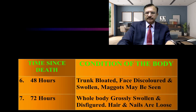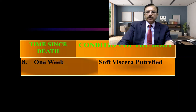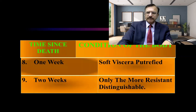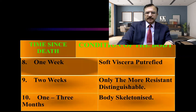In 72 hours, the whole body is grossly swollen and disfigured, and the hair and nails are loose. In one week, the soft viscera putrefy. In two weeks, only the more resistant and distinguishable viscera, like the ovaries and the prostate, are recognizable. And in one to three months, the body is completely skeletonized. This is the overall timeframe.